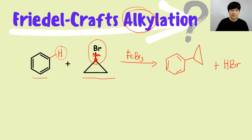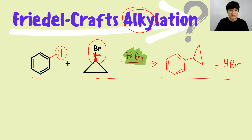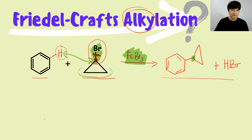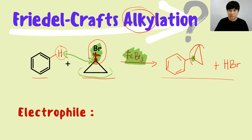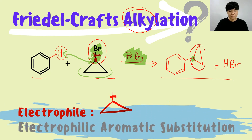Always remember: without a catalyst, this process will never happen, so make sure the catalyst is included. We don't mind what the carbon group looks like — we only care which carbon is holding the Br or Cl, because that carbon is the one that substitutes the hydrogen. The electrophile is the positive cyclopropane carbocation.